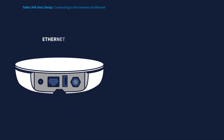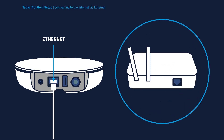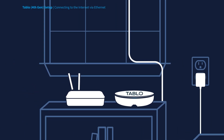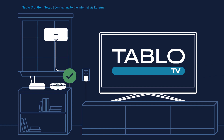To connect Tableau to the internet via Ethernet, simply ensure one end of the included Ethernet cable is connected to your Tableau's Ethernet port, and the other end is connected to your home router. Once your Tableau is connected via Ethernet and powered up, simply wait for the blue LED light on the Tableau device to stop blinking and become solid. Your Tableau should now be connected to your home network.